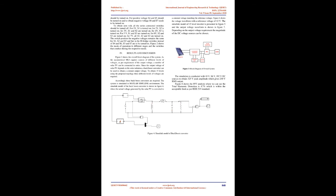The design topology gives out 15 level output voltages: 7V, 6V, 5V, 4V, 3V, 2V, V, 0, -V, -2V, -3V, -4V, -5V, -6V, and -7V respectively. Depending on the output voltage requirement, V can be chosen appropriately. For example, to obtain a peak amplitude of 21V, the voltage sources required are 3V, 6V, and 12V.